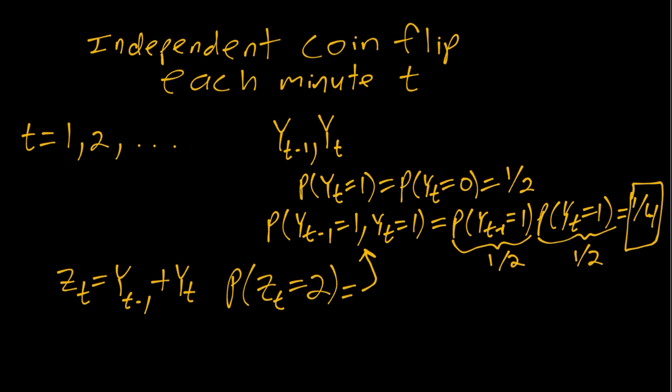And you can do similar calculations to see that even if we have zt minus one and zt, well, that'll just depend on yt minus two, as well as yt minus one and yt.